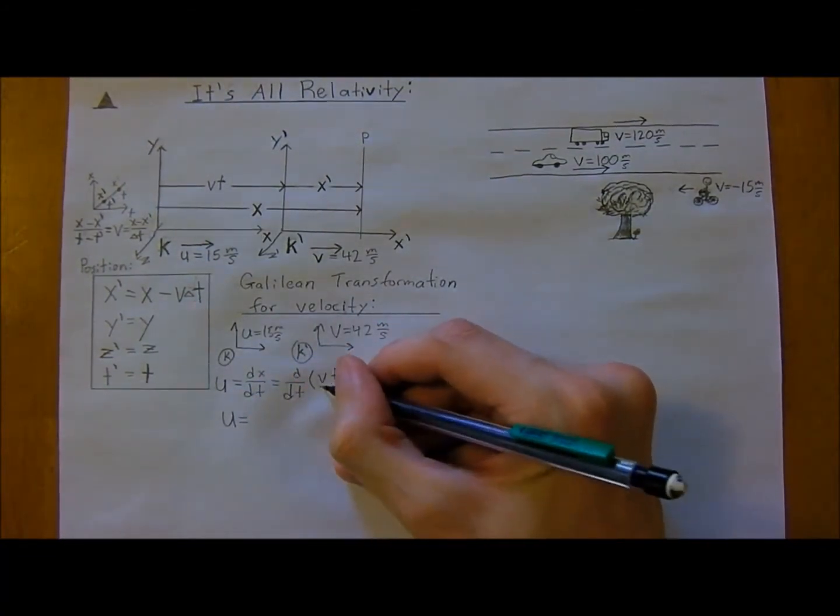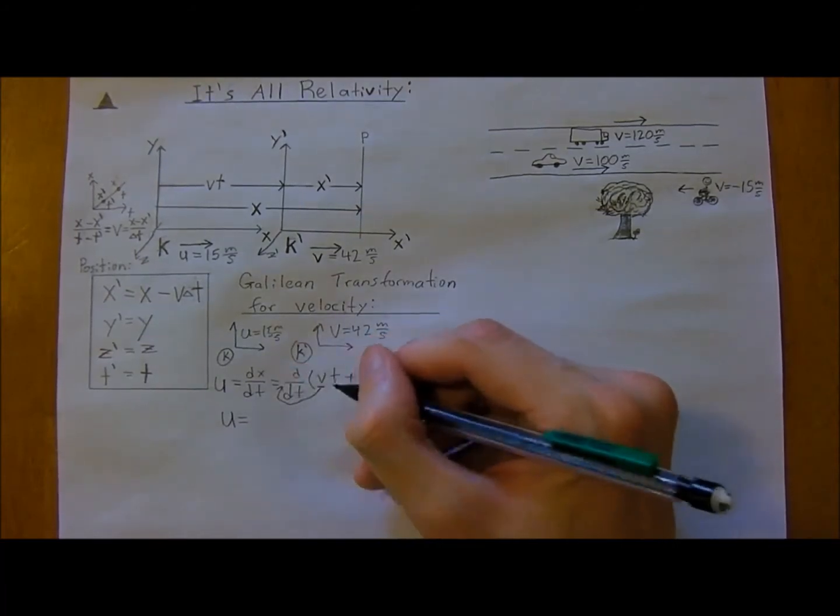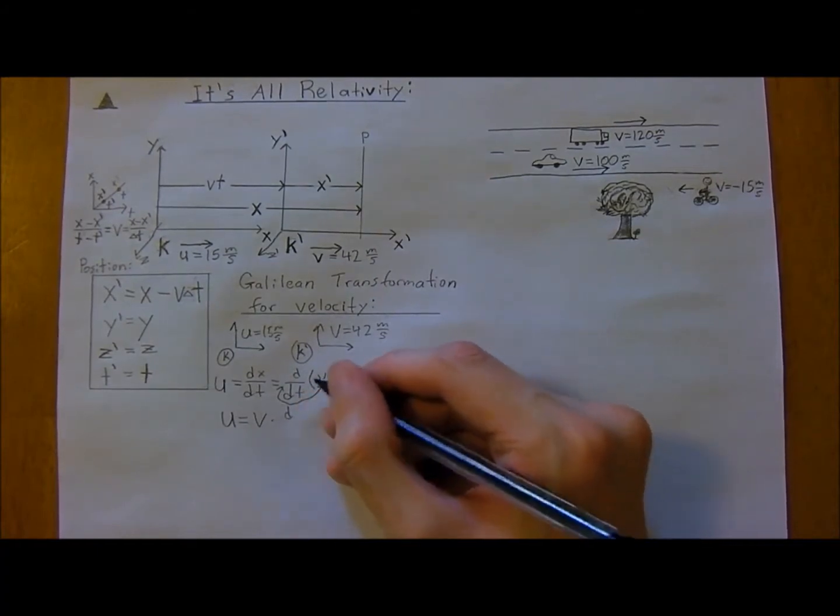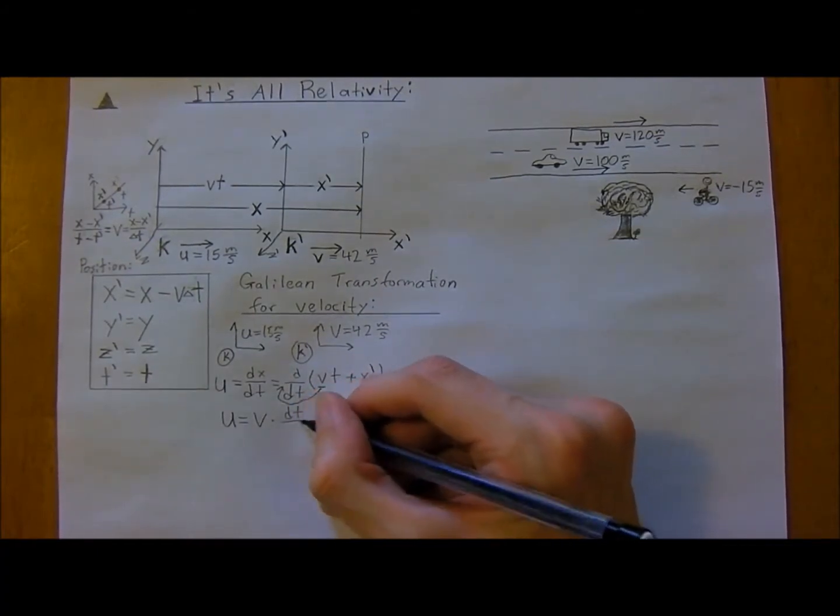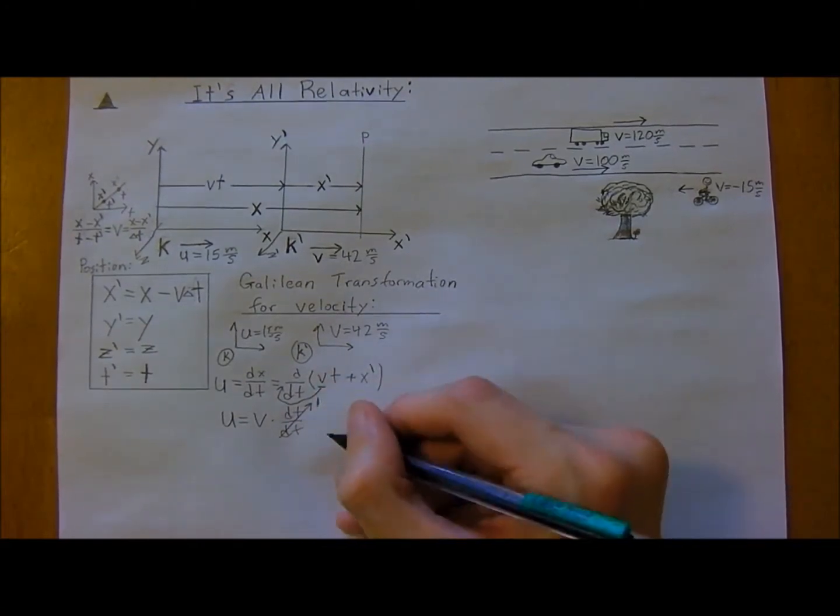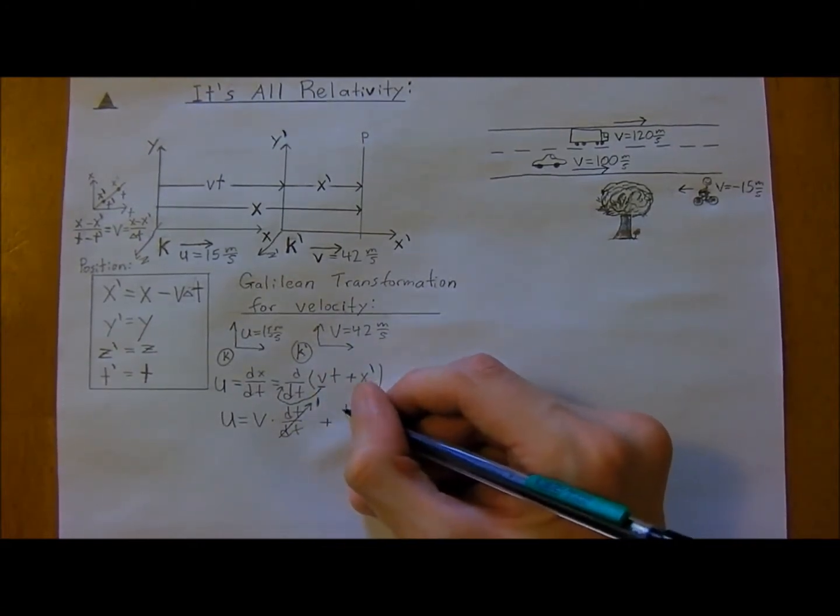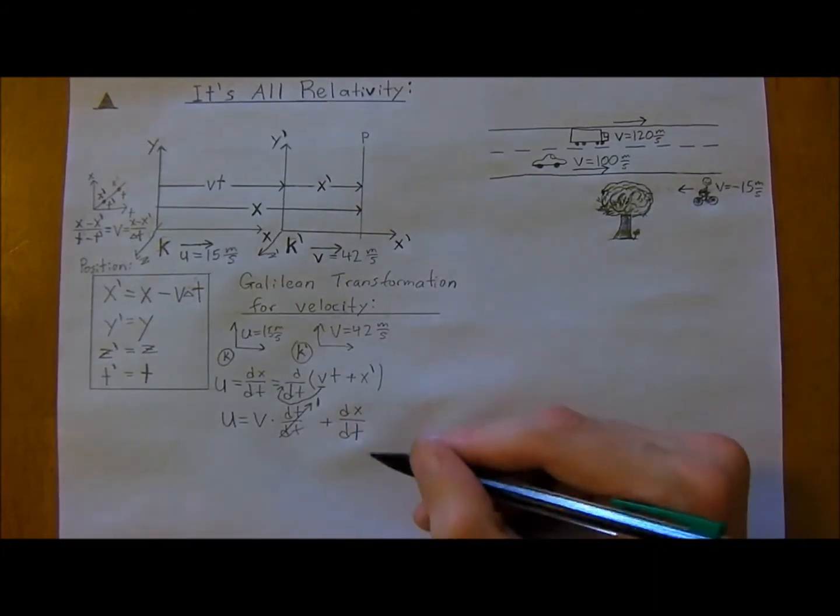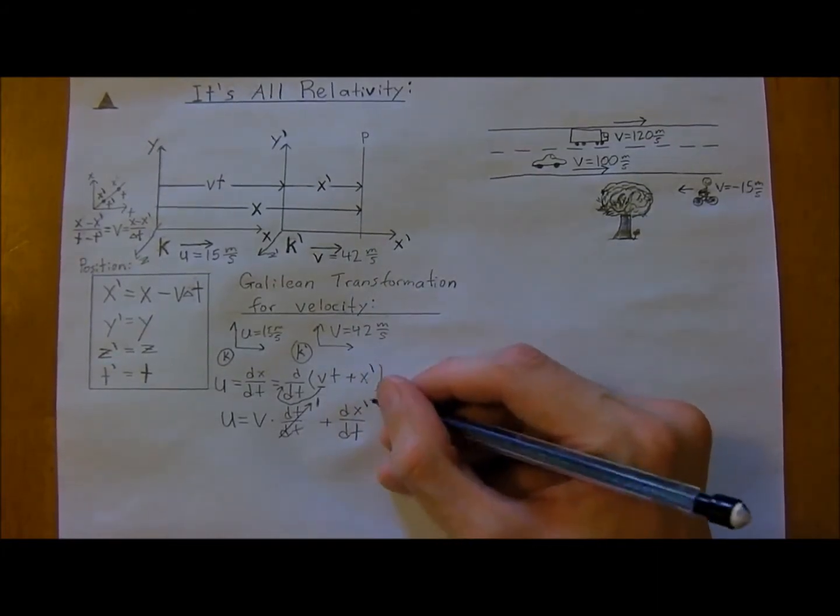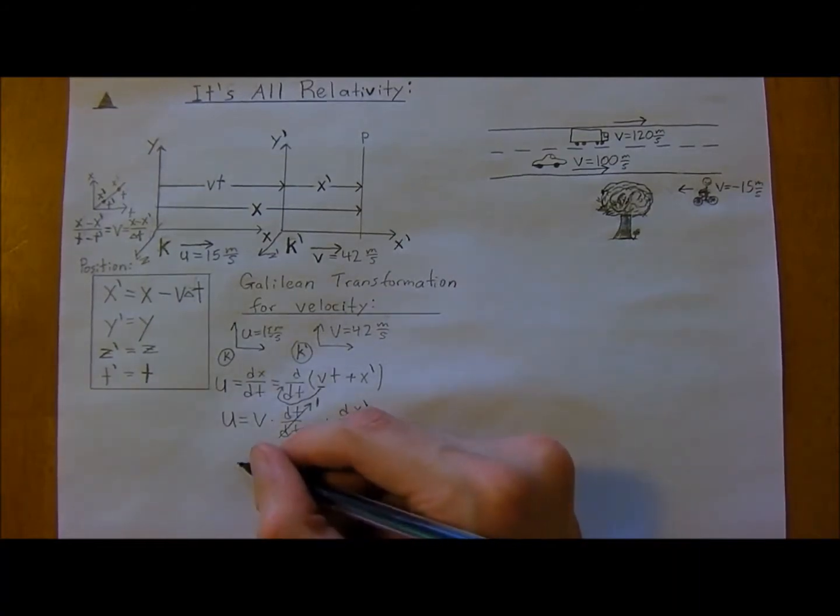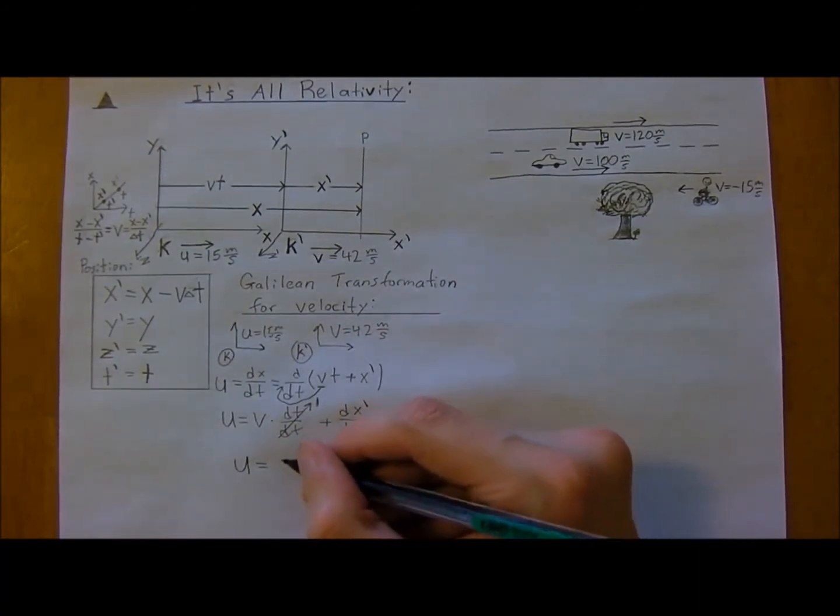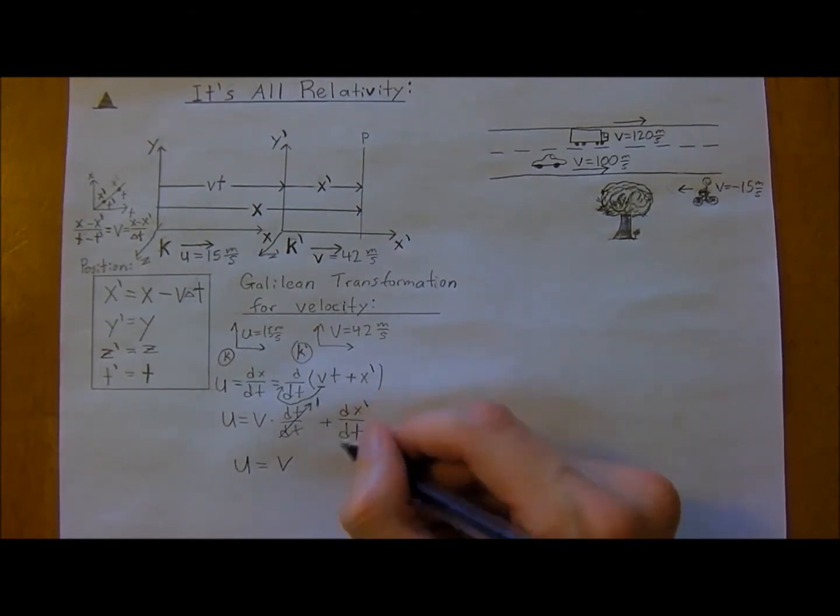And so u is equal to, well, v is a constant, so we're just going to bring that out, so v times change in time over change in time, which just goes to 1, plus the derivative of x with respect to time, x-naught with respect to time. And so really, that means that u is equal to just v times 1, plus change in x over change in time.